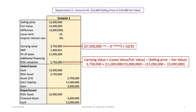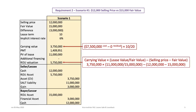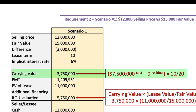Prior to de-recognition of an asset, we must ensure we have the correct carrying value. The building was purchased on January 1, 2020, for $7,500,000 and is depreciated over 20 years with no residual value. Therefore, at year end December 31, 2019, just prior to the sale on January 1, 2020, the carrying value is calculated as $7,500,000 divided by 20 years, multiplied by the 10 years elapsed from 2010 through 2019 inclusive, resulting in a carrying value of $3,750,000.